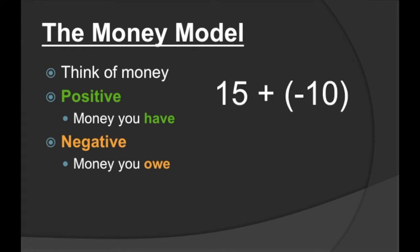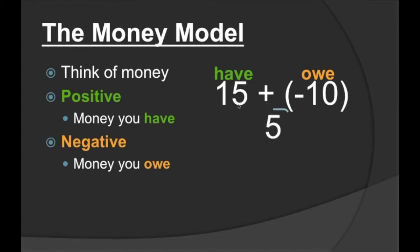So let's take an example. Let's say we have 15 plus negative 10. Our positive 15 means that we have $15, and the negative 10 means that we owe $10. So if we have $15 and we owe $10, we can pay back the 10 that we have and still have 5 left over. So our answer is positive 5.